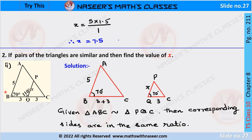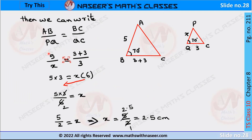Next, second bit. We have two triangles: triangle ABC and triangle PQC. According to the given problem, these two triangles are similar. Then we can write the ratio of the corresponding sides are equal. We can write it as AB by PQ is equal to BC by QC.